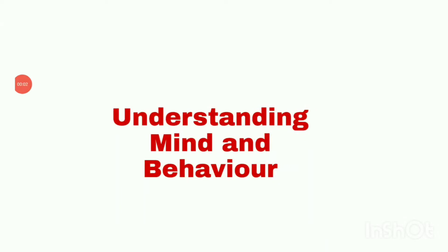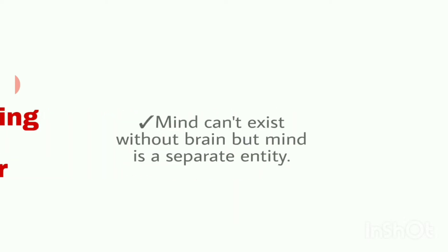Hey guys, welcome to my channel Textbook. Today we are going to study the next topic: understanding mind and behavior. Previous video mein humne padha ki jo mind aur brain hota hai dono alag-alag cheeze hain, but dono alag-alag exist nahi kar sakti — dono ek saath hi exist karta hai. Jab brain kaam karta hai, hum bolte hain brain activate hai, iska matlab hai ki brain ke andar ek mind naam ki cheeze hoti hai jo kaam kar rahi hoti hai.